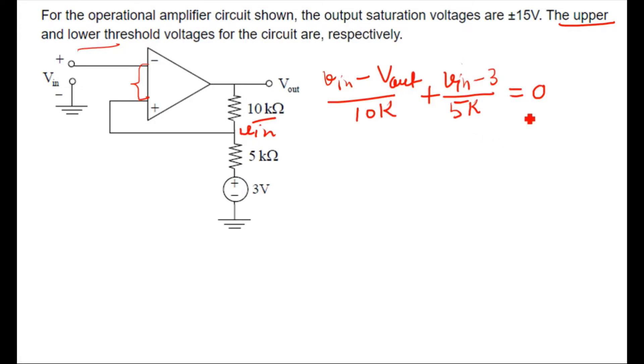So here V_in, we will take the V_in common. So it will become 1 upon 10 plus 1 by 5, I'm removing k here, okay? And minus V_out divided by 10, and here will become 3 by 5.